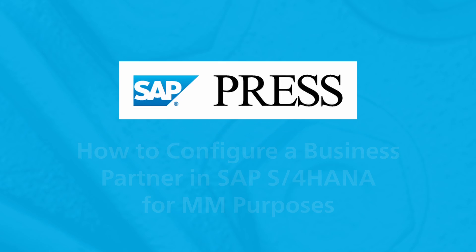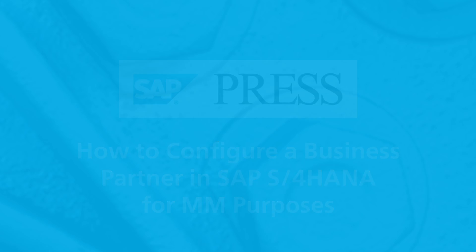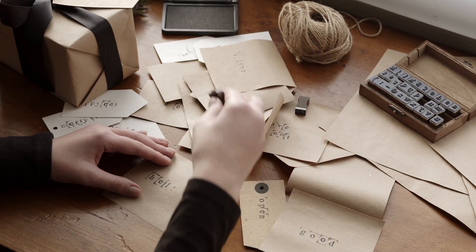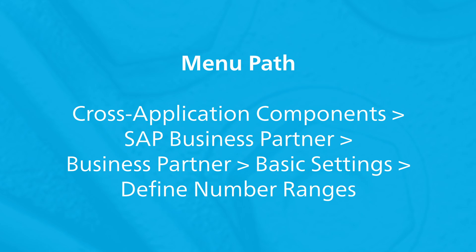Business partners are important structures in an SAP system. In this video we'll cover the steps involved in setting up business partners for materials management purposes. To define a business partner number range, follow this menu path. This figure shows the definition of business partner number range interval MM.